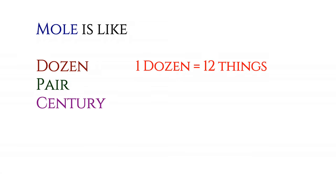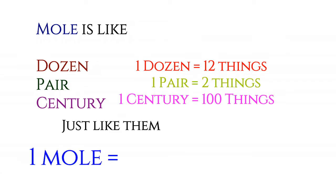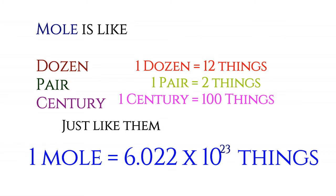Mole is like dozen, pair, and century. We know that 1 dozen equals 12 things, 1 pair equals 2 things, and 1 century equals 100 things. Just like that, 1 mole equals Avogadro's number.